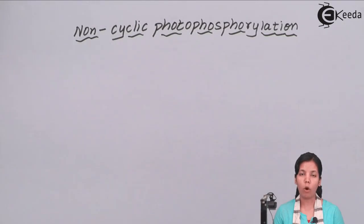The hydrogen or H plus that is generated during photolysis of water is accepted by NADP which gets reduced to NADPH2.